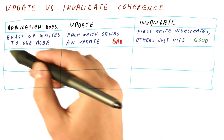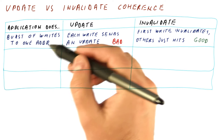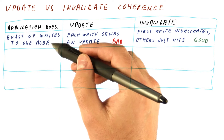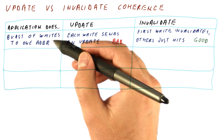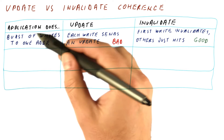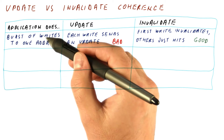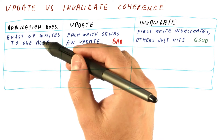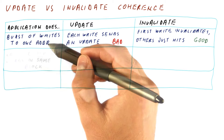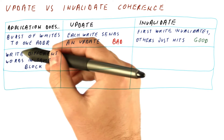Why would an application do a burst of writes to one address? Because when we are computing something, we may need to update it several times until we get to the final result.